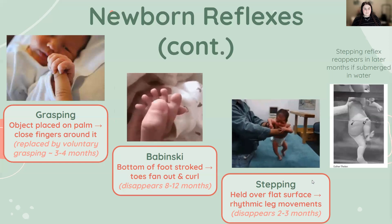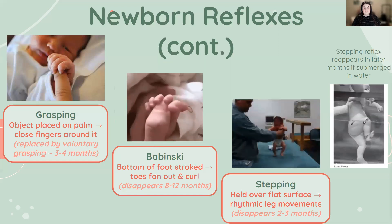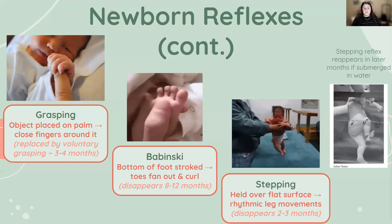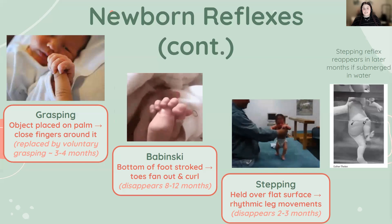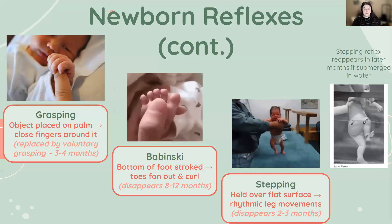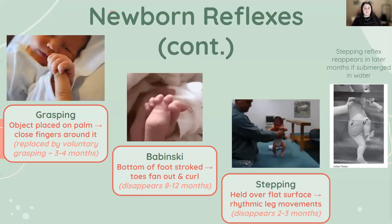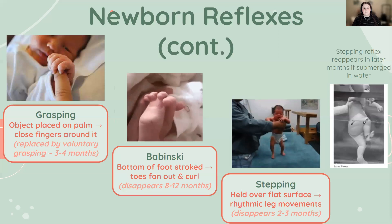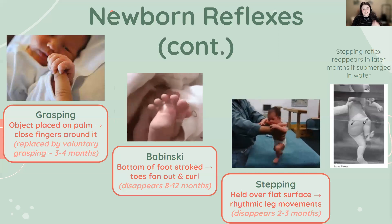The stepping reflex resembles walking. When a baby is held upright with their feet on a flat surface, they make rhythmic leg movements that resemble walking. However, this disappears very early — around two to three months — and doesn't come back until voluntary walking, usually around one year of age. Some believe it's just a reflexive kicking movement; others argue it's an early component of walking, suggesting that growing muscle mass and weight make stepping difficult, which is why it disappears.